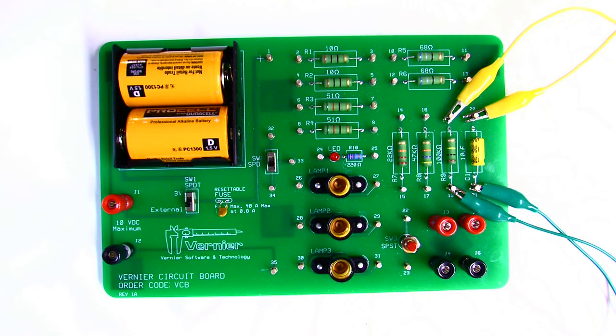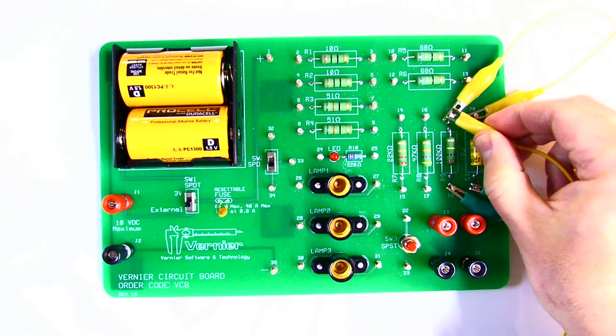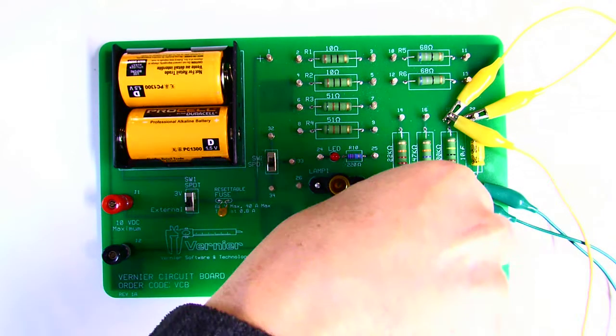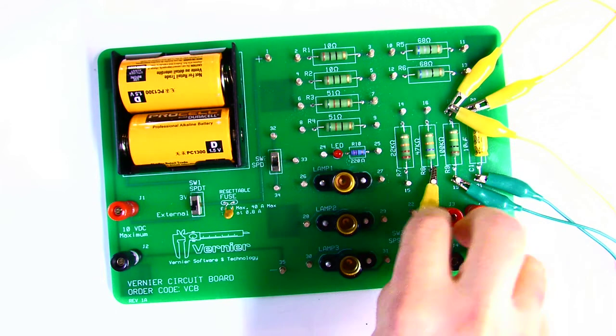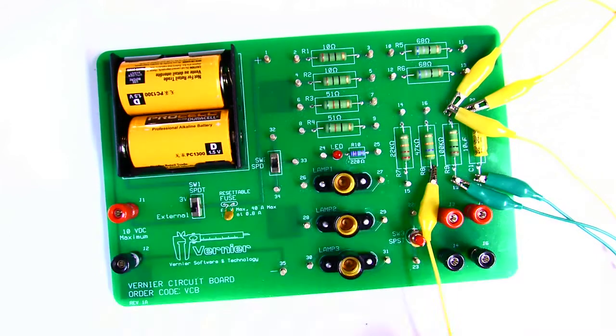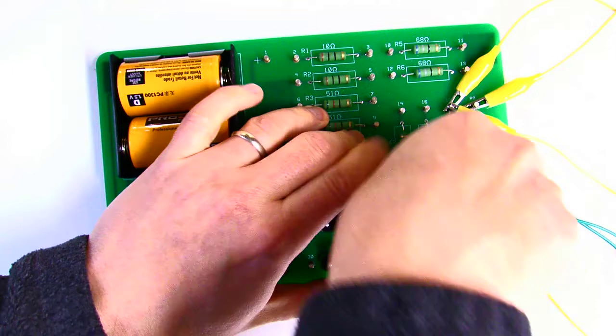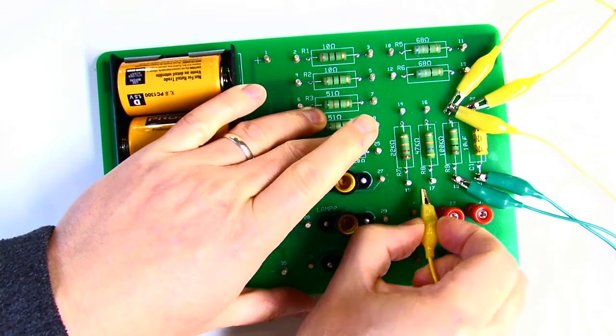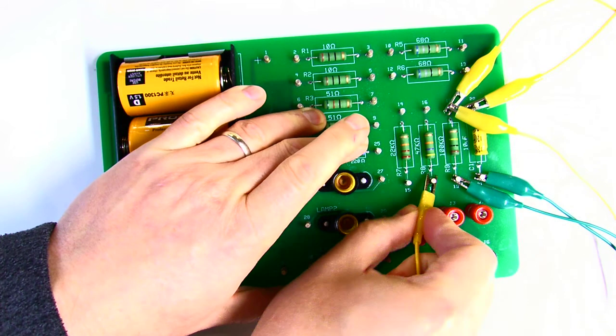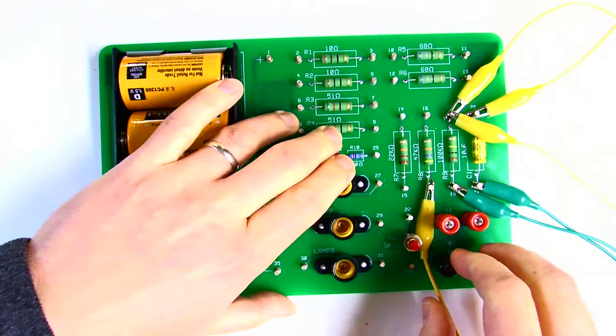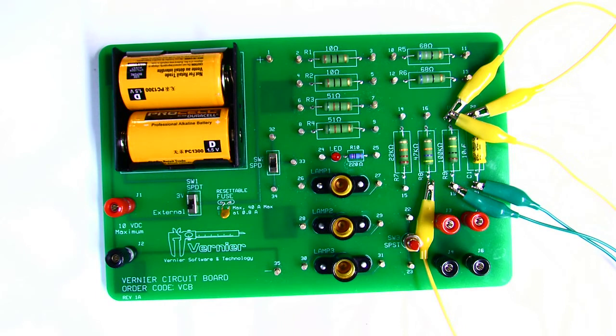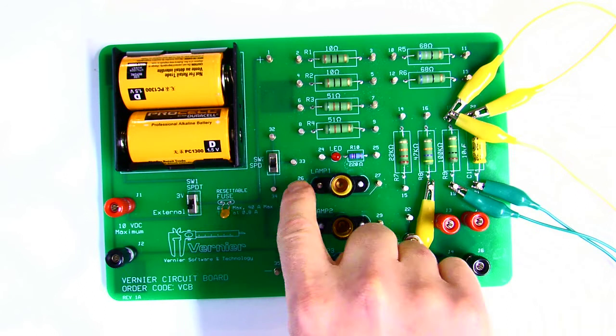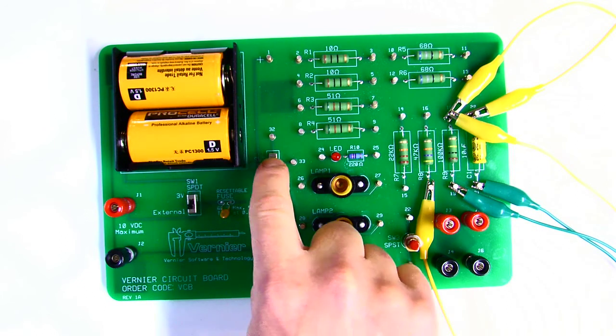I'm going to wire the top end, and it doesn't matter which one of these two I grab, to the bottom of this 47 kiloohm resistor. Then I'm going to wire the top of the 47 kiloohm resistor to pin 33, which is the mid pin in my double throw switch.